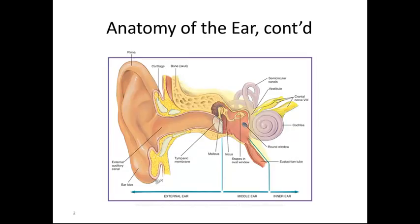Here is a picture of the anatomy of the ear. You have the ear lobe and the pinna, which is the very top. You then have the external auditory canal, which then goes into the tympanic membrane, also called the eardrum.